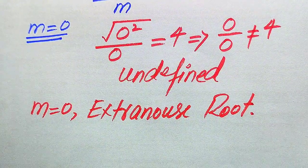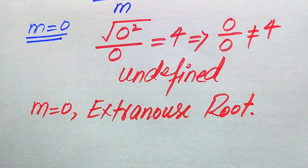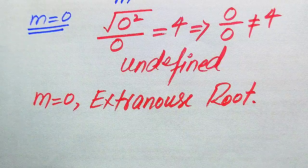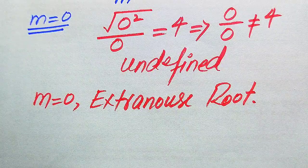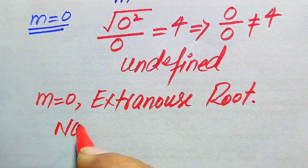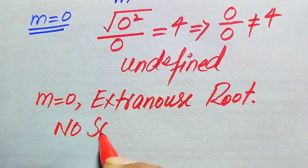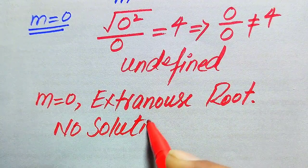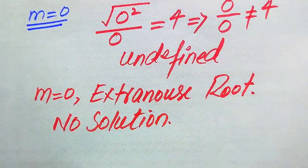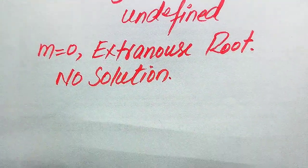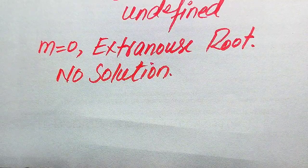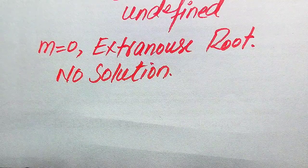We finally conclude that there is no value of m which satisfies the given equation. Therefore, this equation has no solution. This is the conclusion from the first method. Now we solve the same problem using the second method.